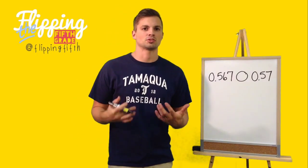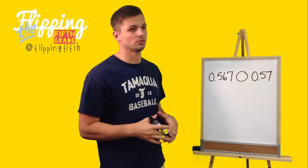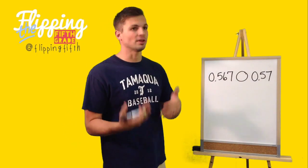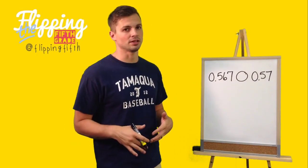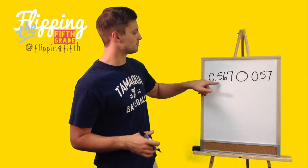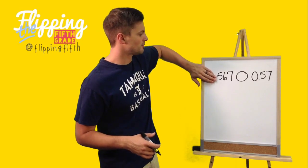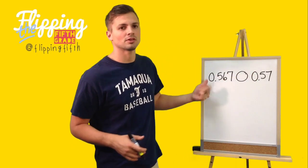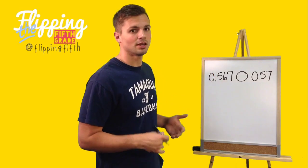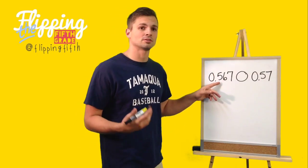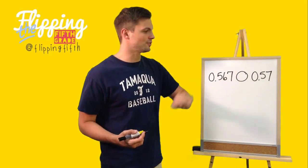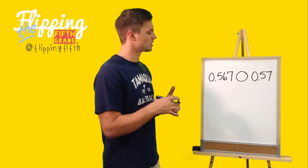Okay, this next one can be tricky because you're talking about comparing two decimals that do not have the same number of digits behind the decimal. So just by looking at it, if you take away the decimals, we have 567 and 57. We know that 567 is greater. However, we're talking about 567 thousandths and 57 hundredths. Completely different.